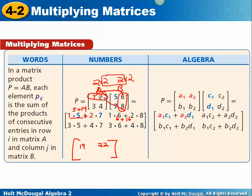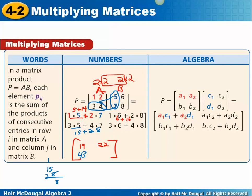We are done with the first row — we did the first row by everything. Now we move to the second row, and we'll multiply it by the first column, then the second column. So 3 times 5 plus 4 times 7 gives 15 plus 28, which is 43. Then the second row by the second column: 3 times 6 and 4 times 8 — 18 plus 32 gives us 53.